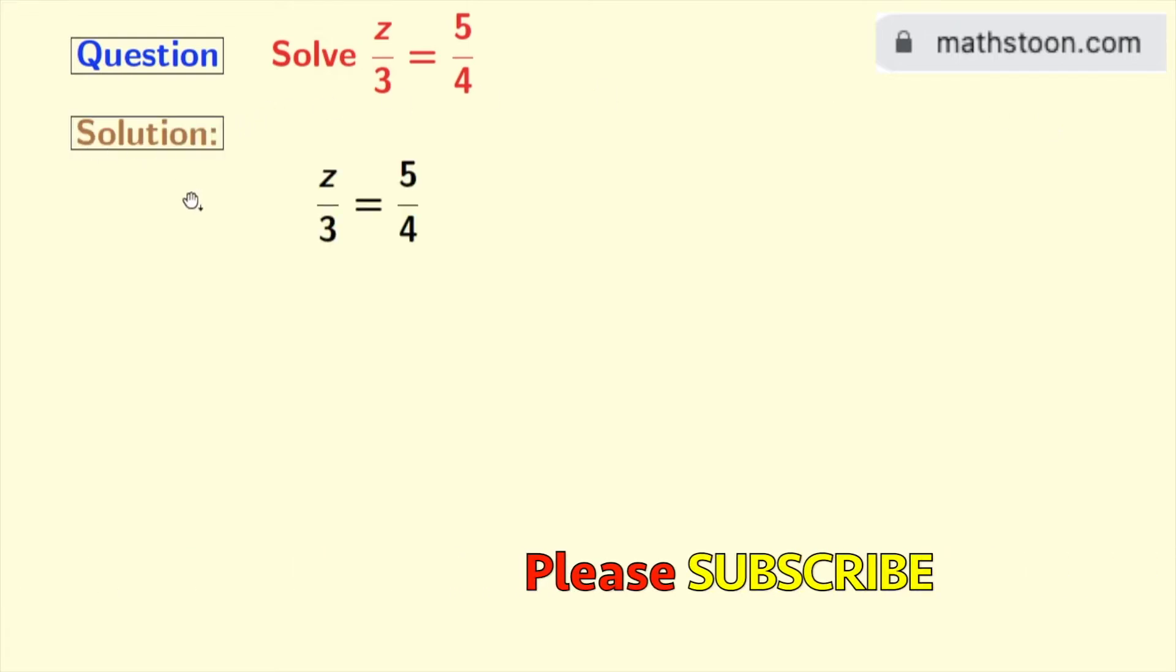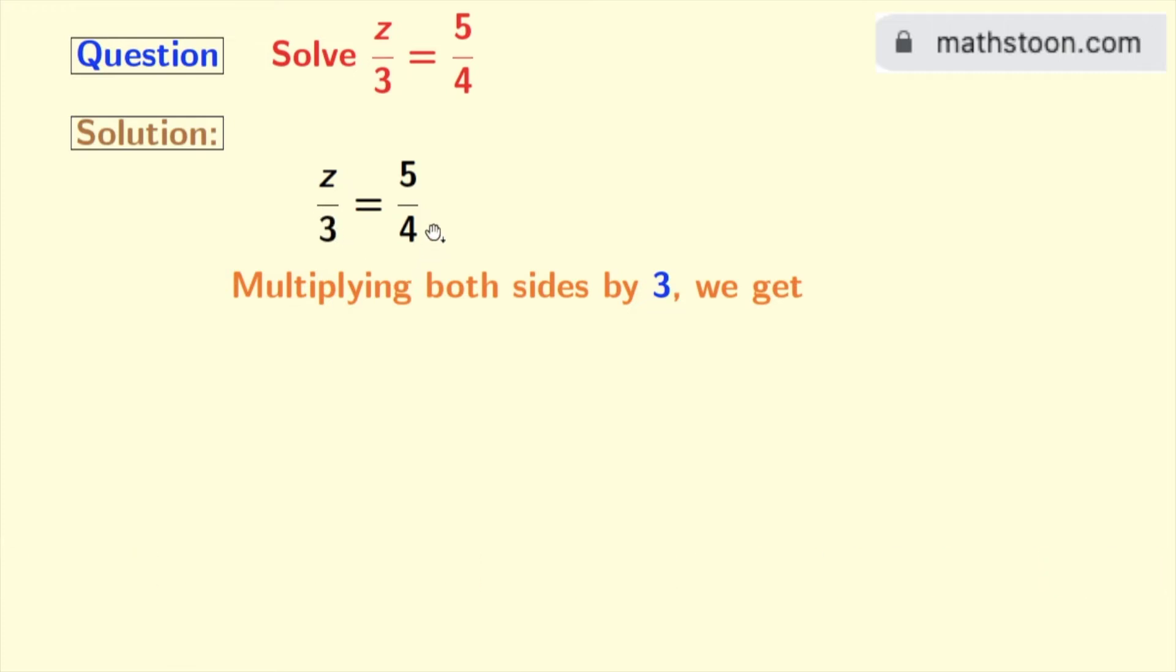This is our given equation. Now look that we have 3 as a denominator on the left hand side. So we will multiply both sides by 3. Doing that, we get z/3 × 3 = 5/4 × 3.